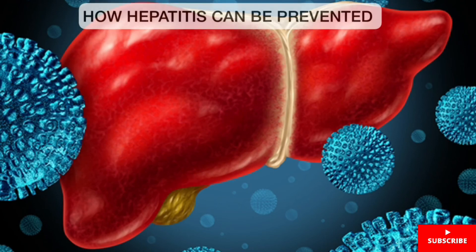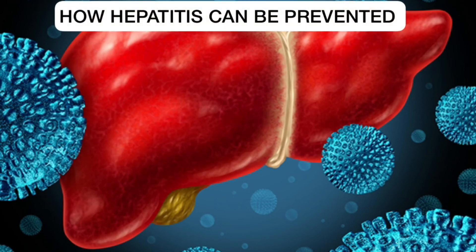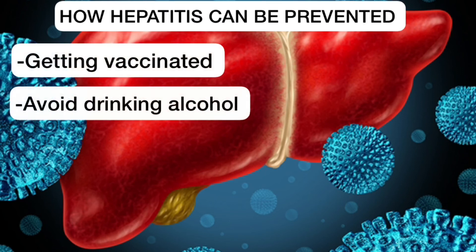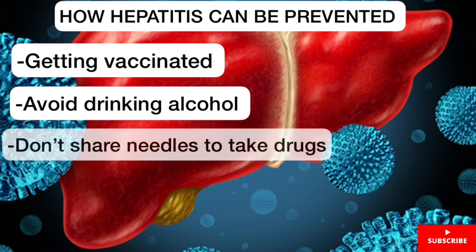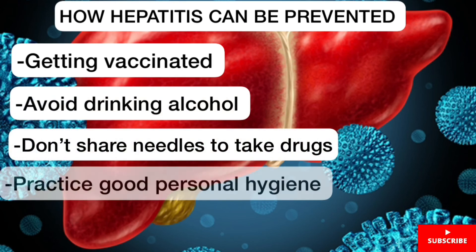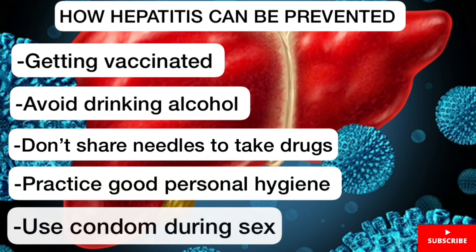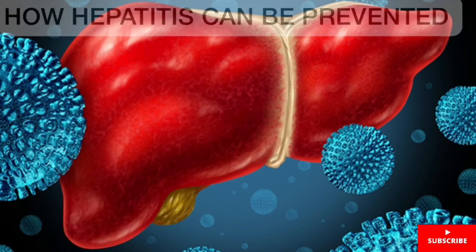How can Hepatitis be prevented? Hepatitis can be prevented by getting vaccinated, avoiding drinking alcohol, avoiding sharing needles to take drugs, and practicing good personal hygiene and using condoms during sex.